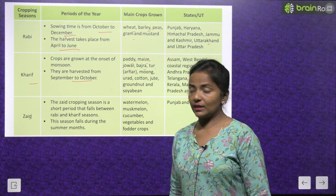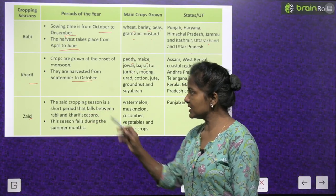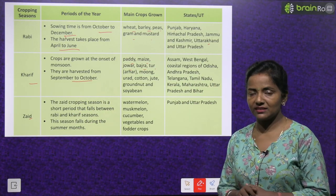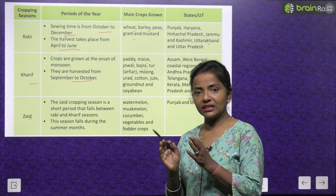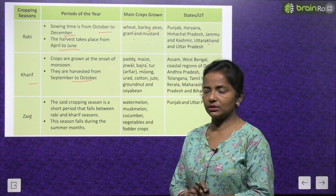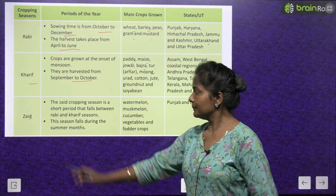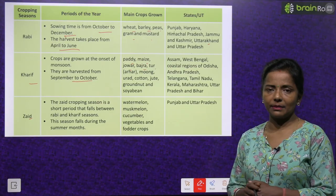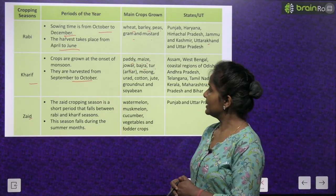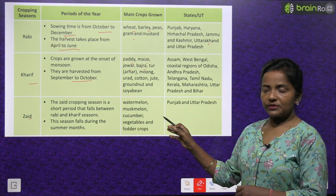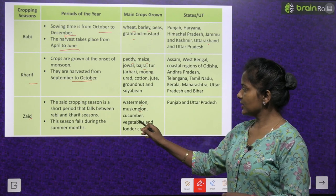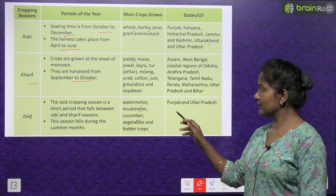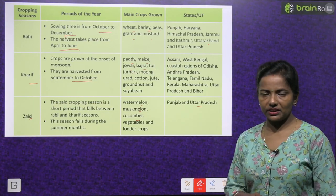Kharif states include Assam, West Bengal, coastal regions of Odisha, Andhra Pradesh, Telangana, Tamil Nadu, Kerala, Maharashtra, Uttar Pradesh and Bihar. The Zaid season is a short period that falls between Rabi and Kharif, during the summer months. Main crops: watermelon, muskmelon, cucumber, vegetables and fodder crops. States: Punjab and Uttar Pradesh.